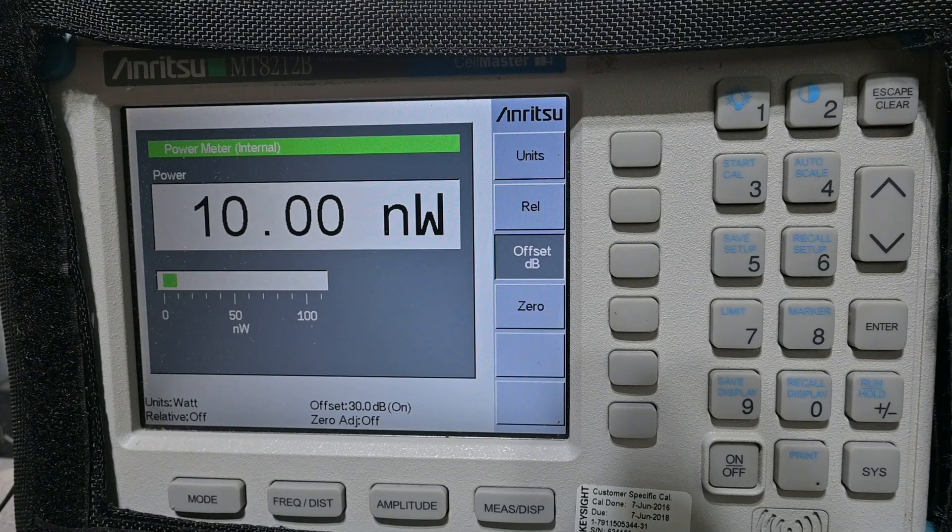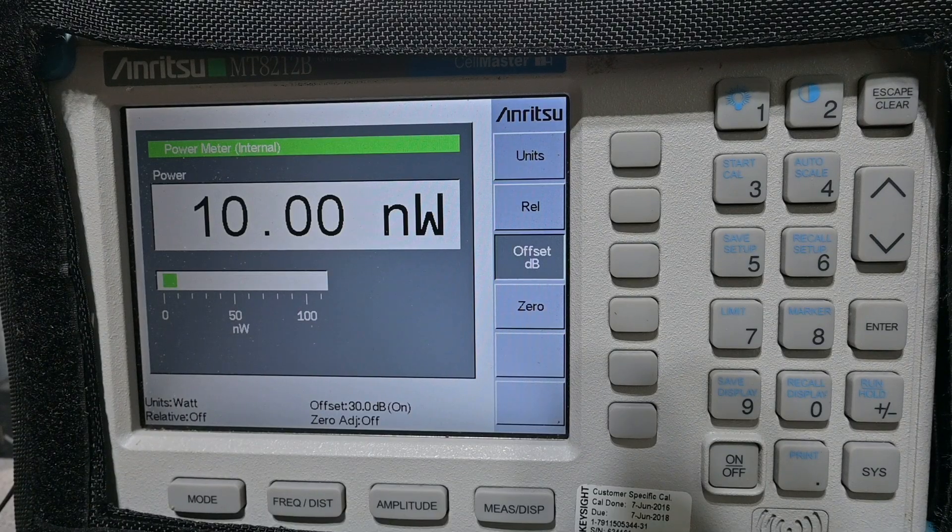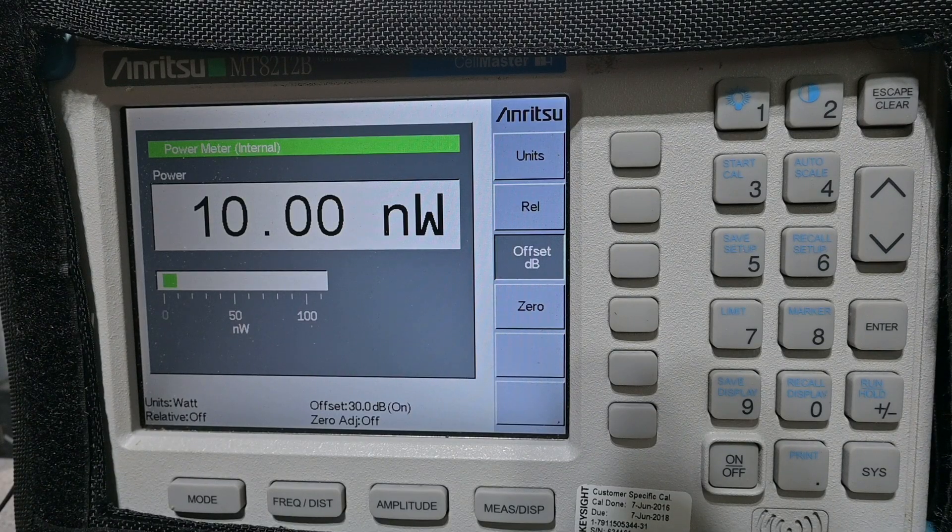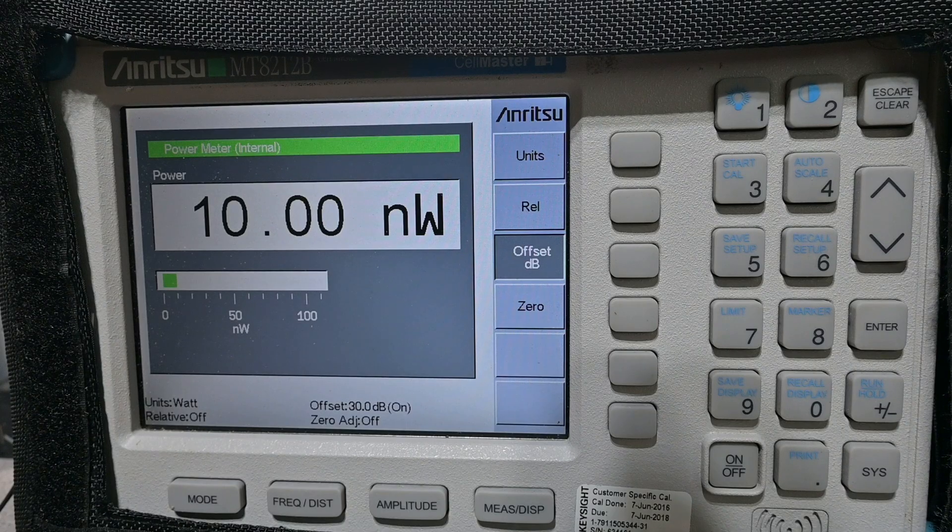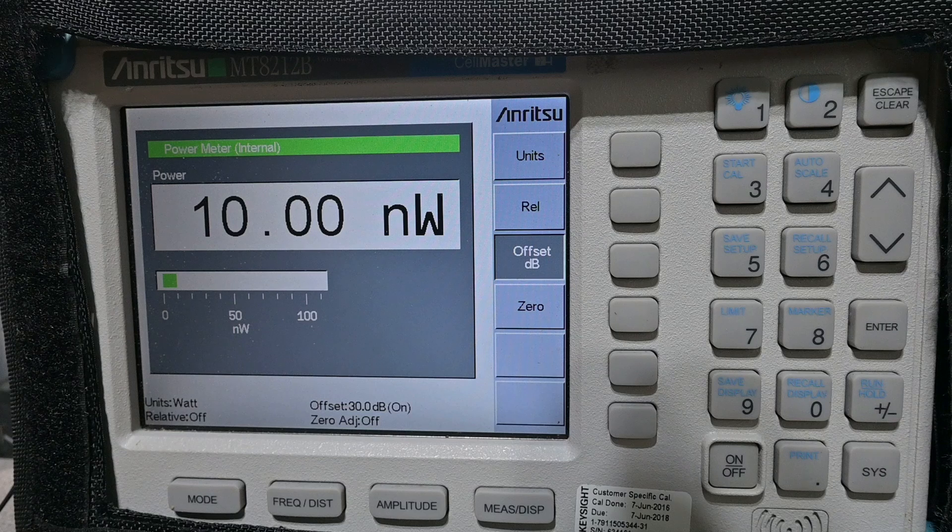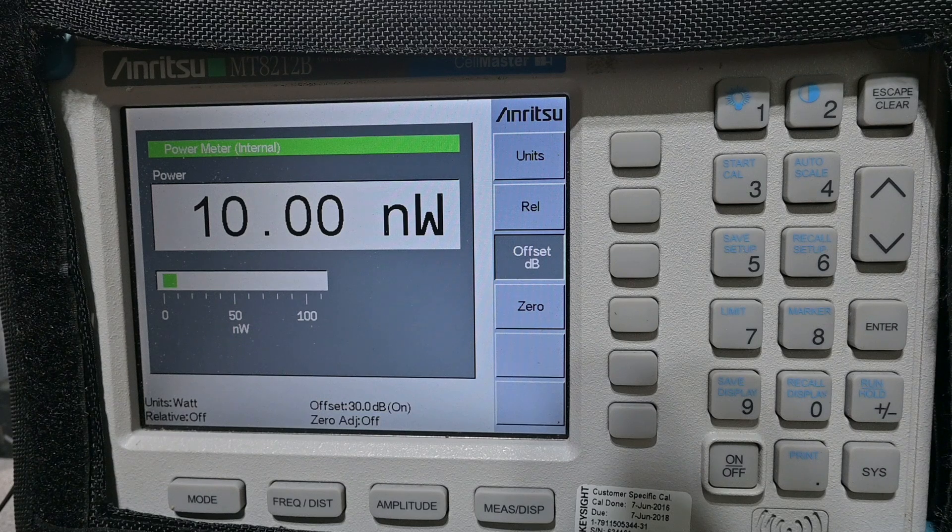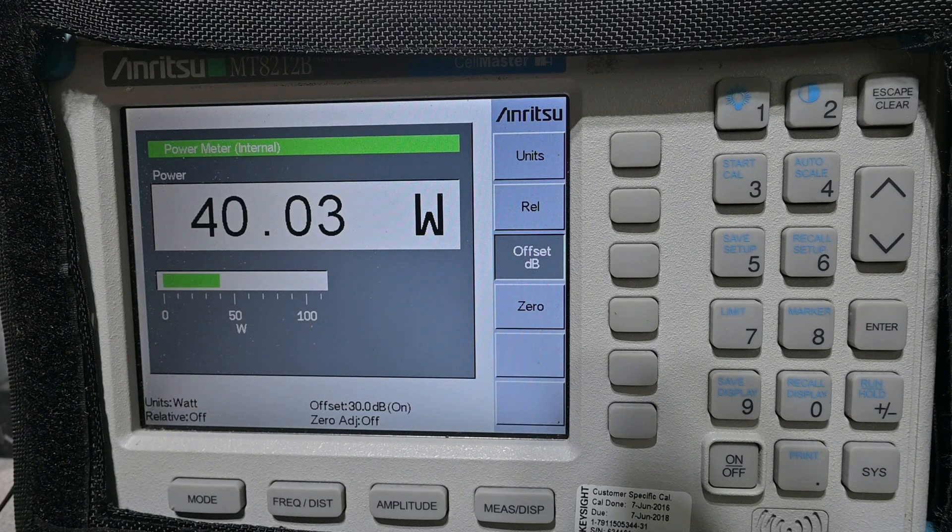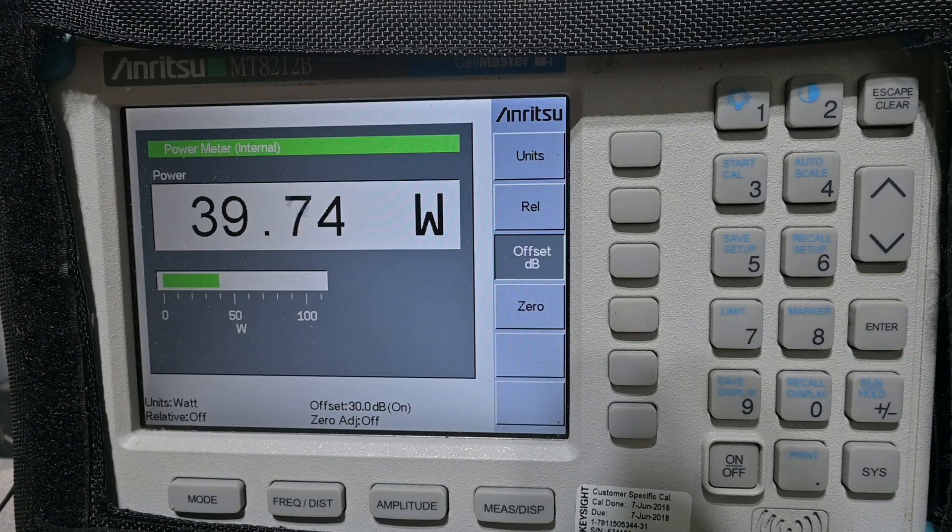Let's go ahead and check the accuracy of our meter at a higher power level. We're going to do it with VHF, and we're going to use my Anritsu CellMaster as our standard. So I'm going to go ahead and transmit now.